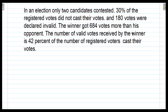Friends, here is a question on the screen. In an election, only two candidates contested. 30% of the registered voters did not cast their votes, and 180 votes were declared invalid. The winner got 684 votes more than his opponent. The number of valid votes received by the winner is 42% of the registered voters. Now, it is said that 30% of registered voters did not cast their votes, which means 70% have cast their votes.